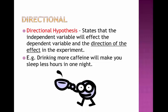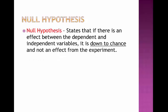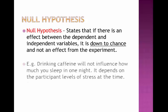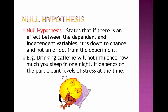Now the last type of hypothesis, which students sometimes forget, is the null hypothesis. The null hypothesis states that if there is an effect between the dependent and independent variable, it will be down to chance and not due to the effect of the experiment. For example, drinking more caffeine will not influence how much you sleep in one night. It depends on the participant levels of stress at the time. So what they are studying doesn't actually contribute to the effects of the experiment, but some other confounding variable outside of their realm affects the experiment. In this case, it is the levels of stress affecting the sleep.